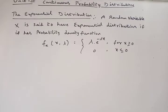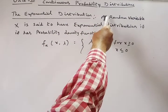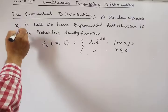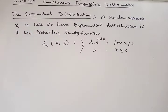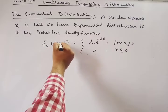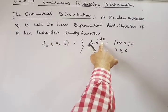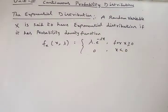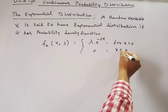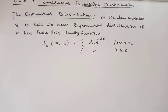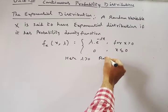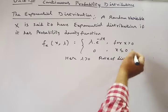The definition of exponential distribution: a random variable X is said to have an exponential distribution if it has probability density function f(x; λ) = λ · e^(−λx) for x ≥ 0, and 0 for x < 0. Here λ > 0 is called the rate of distribution.